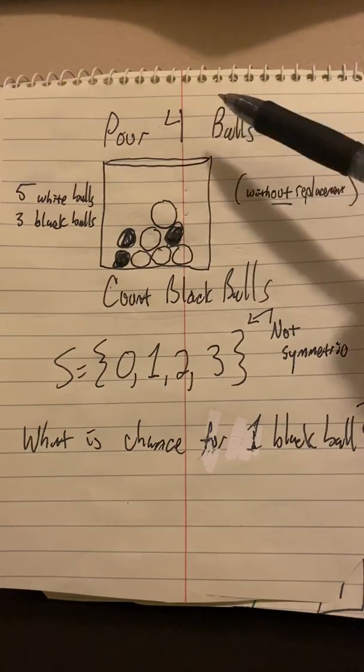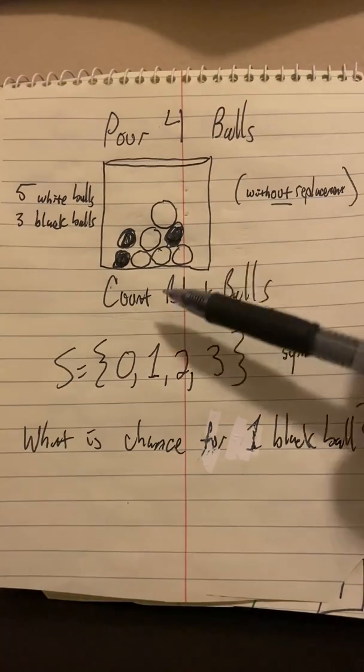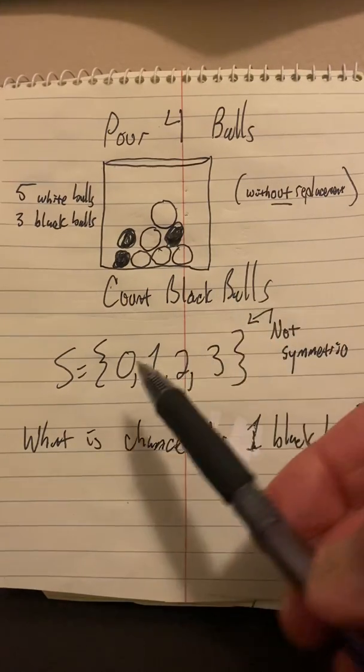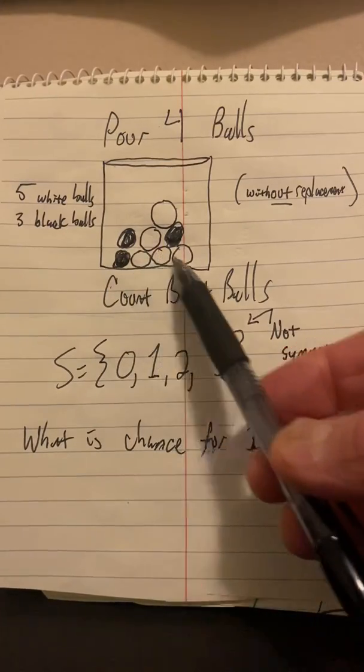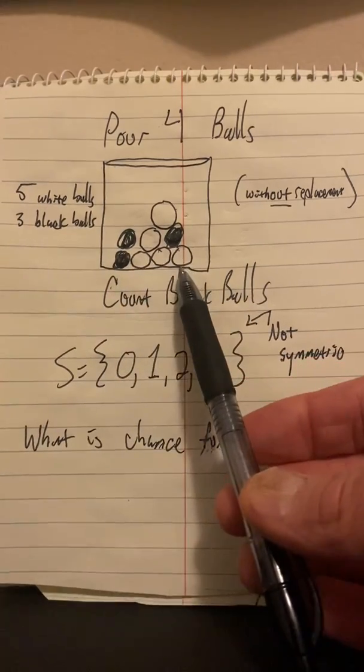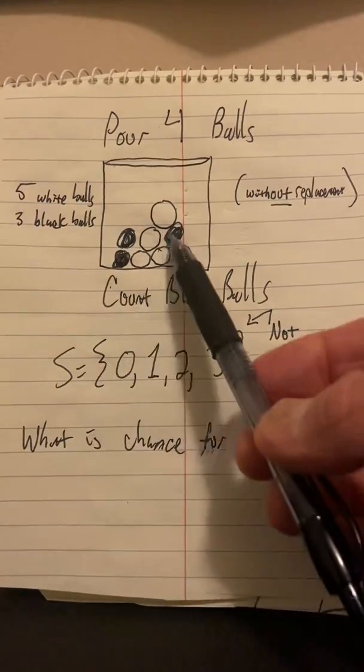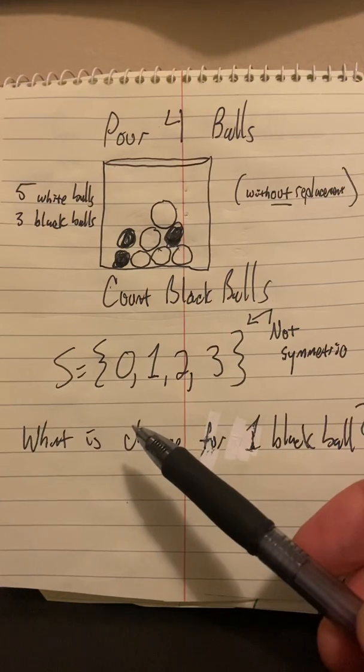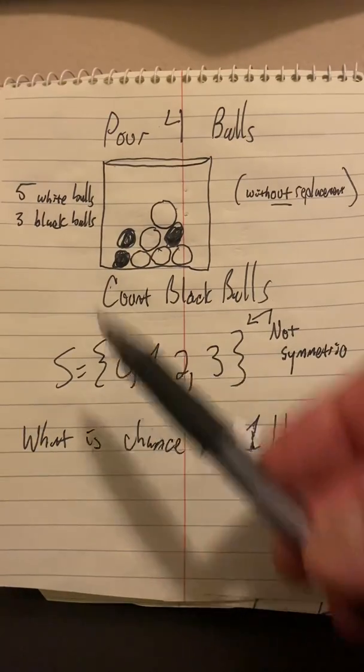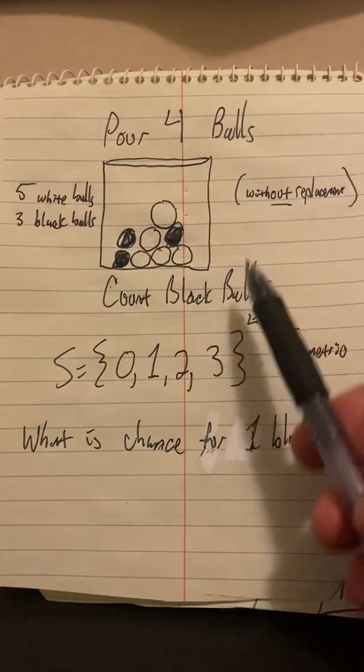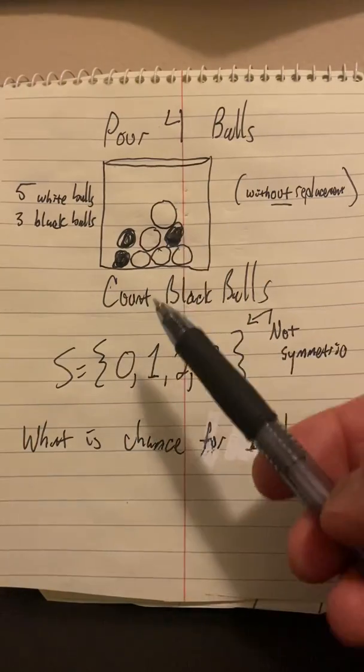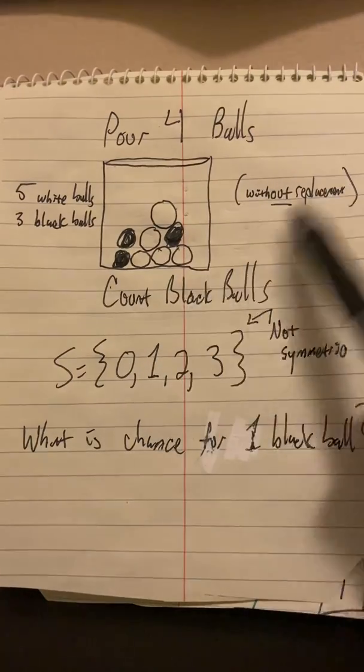So the experiment is pour out four or select four without replacement and count the number of black balls. So the outcome that we're looking for is the number of black balls. We're counting them. We could get zero black balls, right? We could pour out these four white balls right here and there'd be zero black balls. We could pour out this black ball along with three whites. That'd be one black ball. We could pour out two blacks and two whites. We could even pour out three blacks and one white, but we cannot pour out four blacks because there aren't four blacks in the population. So the sample space is zero, one, two, three. When you make a sample space, you need to remember you're recording what the random variable values could be. The random variable is how many black balls did we count? Because that's the observation that we're making from this experiment.